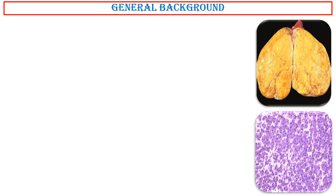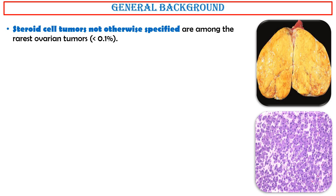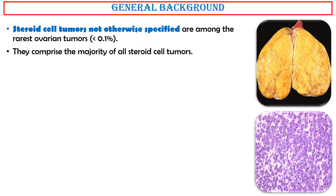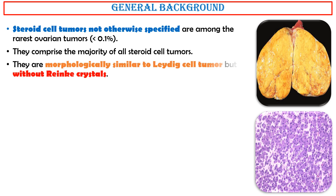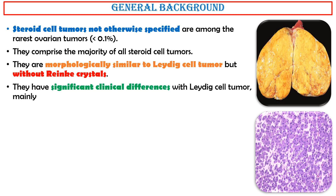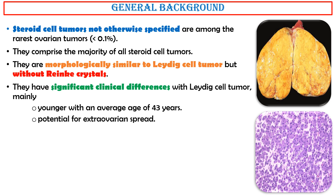General background. Steroid cell tumors not otherwise specified are among the rarest ovarian tumors, less than 0.1%. They comprise the majority of all steroid cell tumors. They are morphologically similar to Leydig cell tumor but without Reinke crystals. They have significant clinical differences with Leydig cell tumor, mainly affecting younger patients with an average age of 43 years, and have potential for extra-ovarian spread.